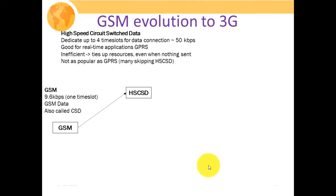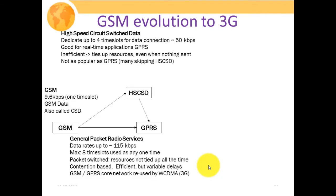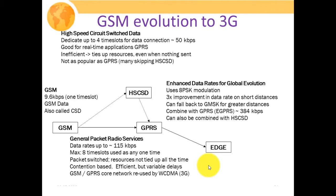We combined four circuit switched data channels to get almost 50 kilobits per second, which is good for real-time applications. In the early 2000s era, 10 kilobits per second was sufficient for checking messages, stock quotes, or emails. Those applications were supported well at 50 kilobits per second. Another variant was GPRS, which provided data rate services, and from GPRS we moved forward to EDGE — enhanced data rate for GPRS enabled nodes — for providing further higher data rates.